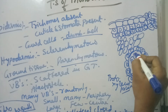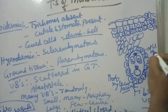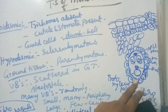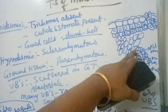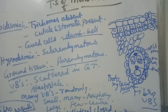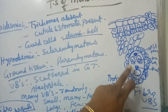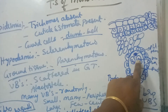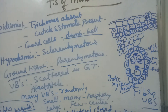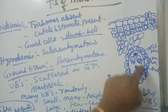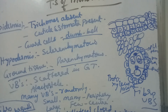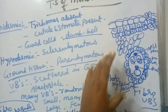Phloem is present in between the two arms of the Y-shaped xylem arrangement. Xylem and phloem lie on the same radius but no cambium is present, making these closed vascular bundles — conjoint, collateral, closed with endarch xylem. These fibrovascular bundles are scattered throughout the ground tissue in monocot stem.